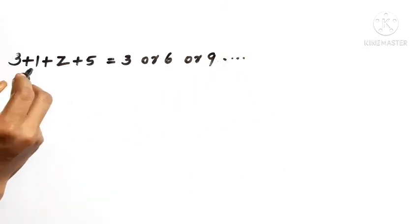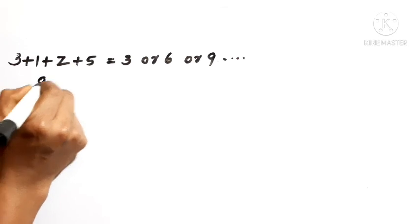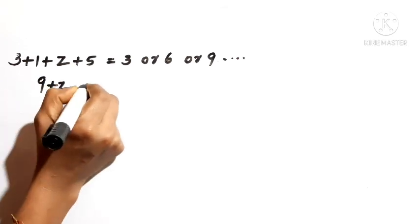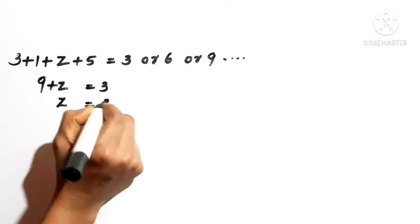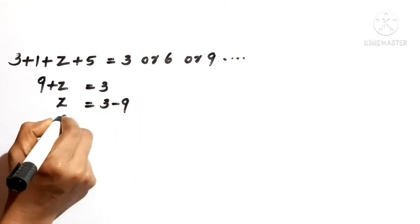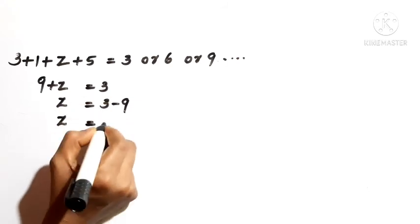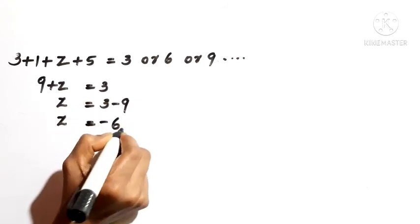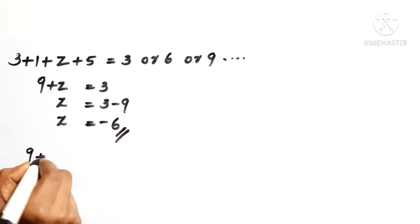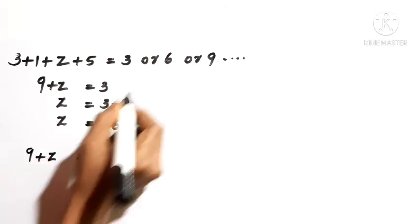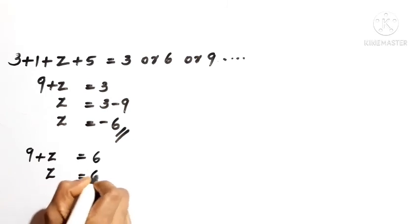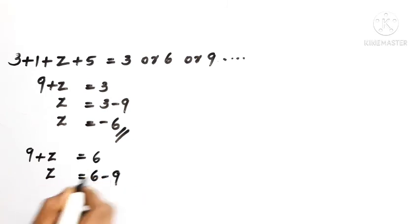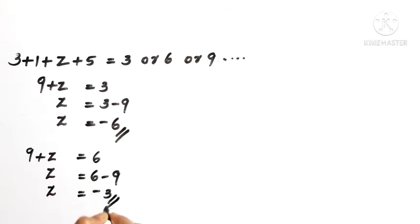So 3 plus 1 equals 4, and 4 plus 5 equals 9. Therefore, 9 plus Z must equal a multiple of 3. Setting 9 plus Z equal to 3 gives Z equals 3 minus 9, which is minus 6. Setting 9 plus Z equal to 6 gives Z equals 6 minus 9, which is minus 3. Both are negative, so these are not valid digit values.